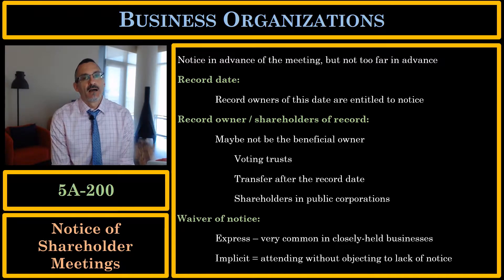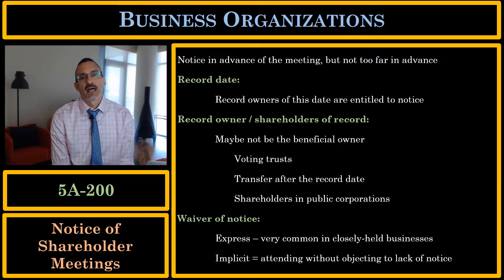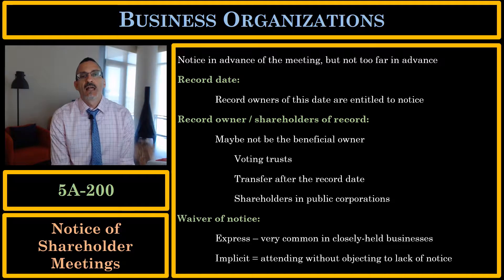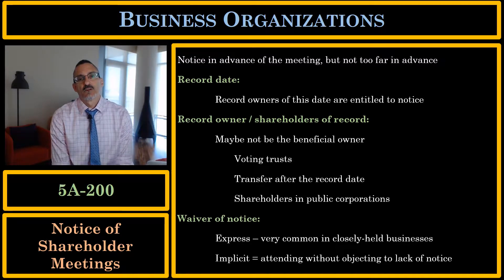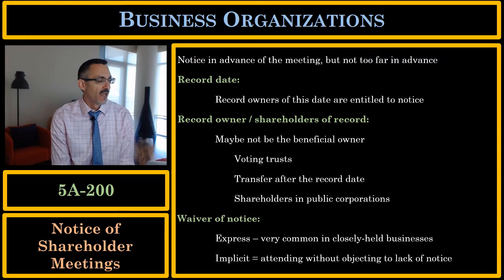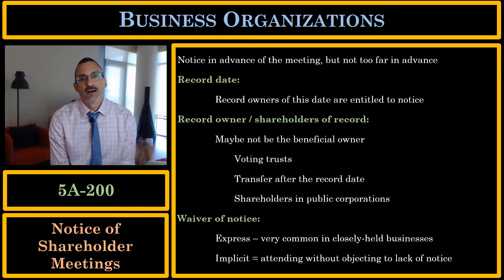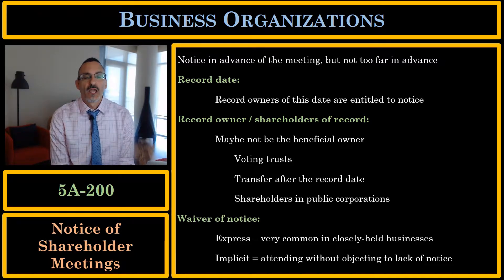A shareholder can also implicitly waive notice of the meeting by attending the meeting and not objecting to the lack of notice. If you're a shareholder who did not receive advance notice, you have a right to challenge anything that happens at that meeting. But if you attend and do not object to the lack of notice, you have implicitly waived it.